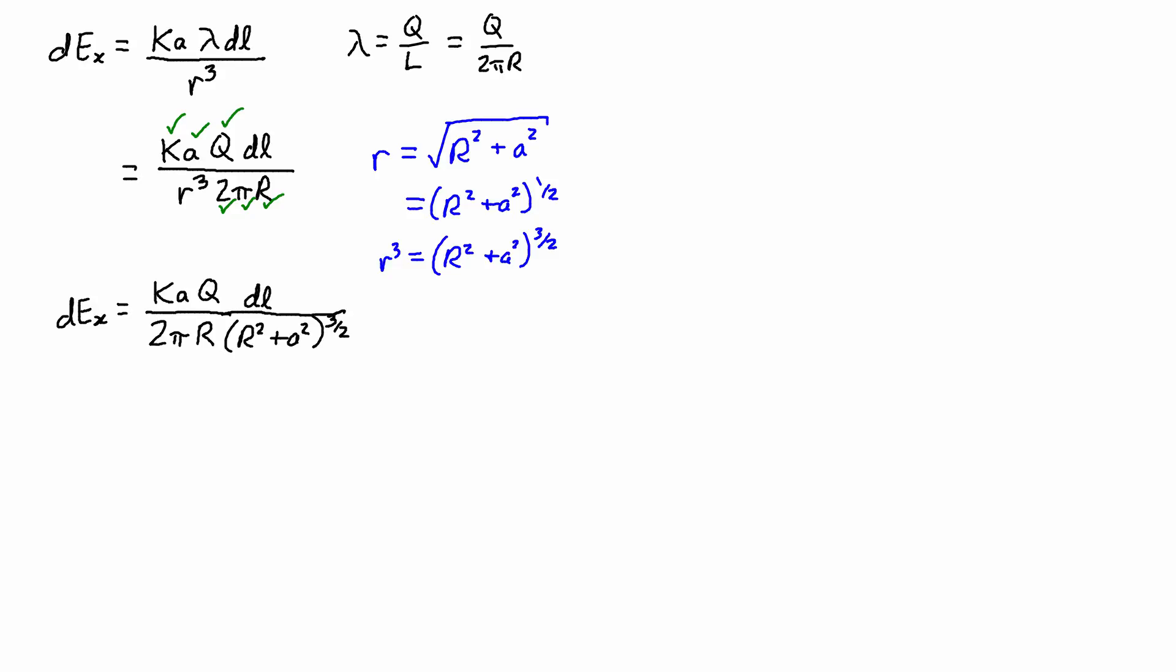And then I'm ready for the third step, which is to integrate this to get the actual electric field expression. This is the total electric field at point P in the x direction. And the reason, again, that I'm ignoring the off-axis components is because of symmetry. And now I'm actually going to integrate dE.